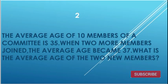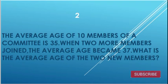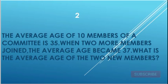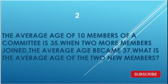The average age of 10 members of a committee is 35. When two more members joined, the average age became 37. What is the average age of the two new members? The average age was 35, and the average age of the two female members of the committee is 35. The average age is 37.